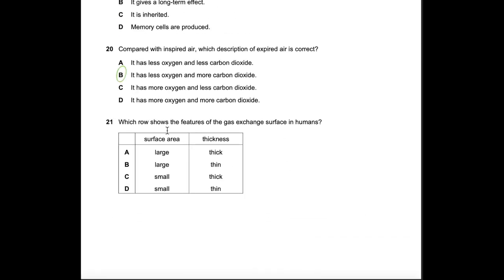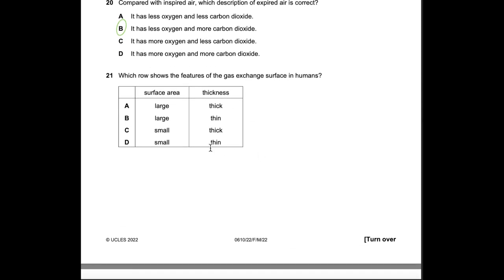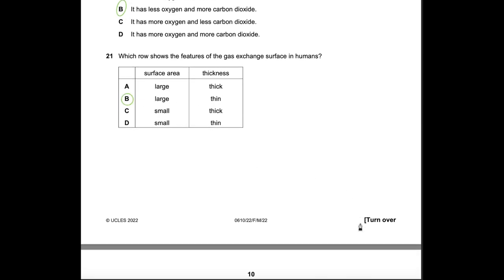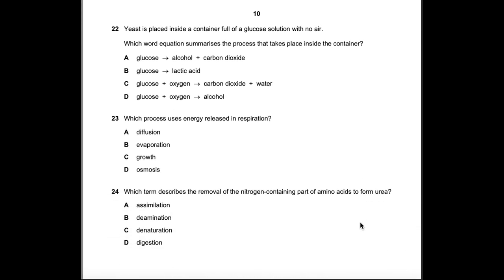Question 21: Which row shows features of a gas exchange surface in humans? The surface area should be large and the thickness thin, to decrease the diffusion distance and allow faster gas exchange. Answer: B.